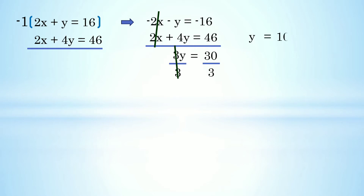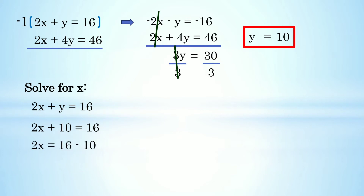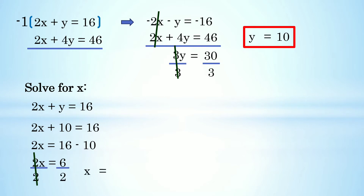So y = 30 ÷ 3 = 10. Dahil nakuha na natin si y, pwede na natin hanapin si x. Gamitin natin ulit yung first equation: 2x + y = 16. Palitan si y ng 10, so 2x + 10 = 16. Ilipat si 10 sa kanan: 2x = 16 - 10 = 6. Divide both sides by 2: x = 6 ÷ 2 = 3. The value of x is equals to 3.